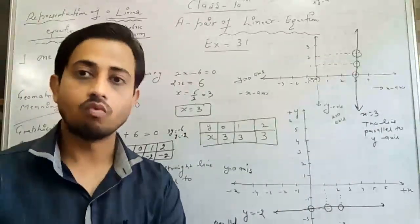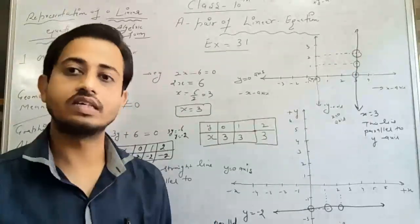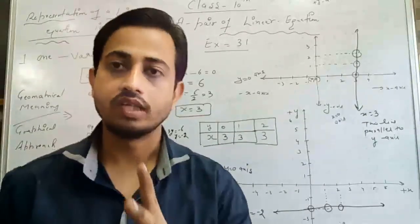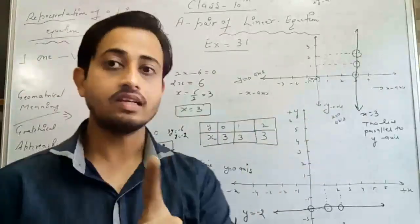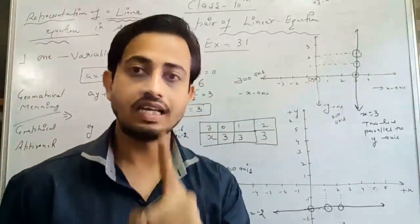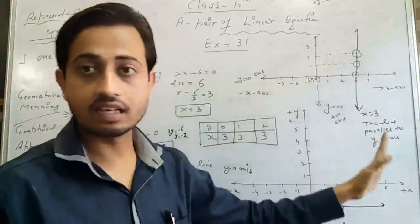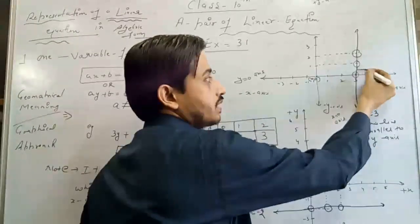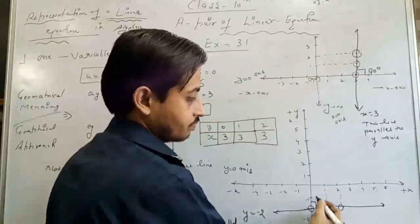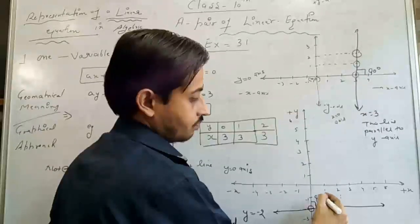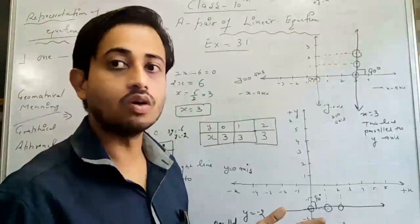Please make a note: a linear equation in one variable form gives a line either parallel to the x-axis or parallel to the y-axis, not inclined at any other angle. In this case the angle is always 90 degrees with the respective axis — it cannot be an inclined angle.